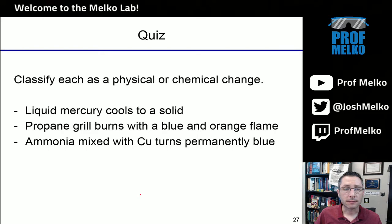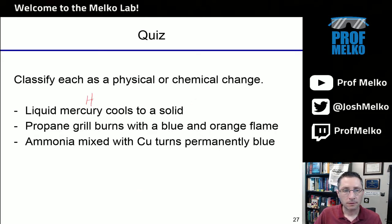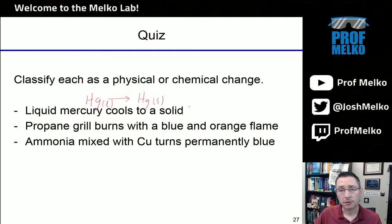Let's try a quiz. Read through this and try to classify each of these as a physical or chemical change — feel free to pause the video now and try it yourself. Liquid mercury — mercury is capital H, lowercase g — cools to a solid. Mercury is not turning into a different compound; it's still mercury. It's just going from a liquid phase to a solid phase, so this is just a phase change, just a physical change.